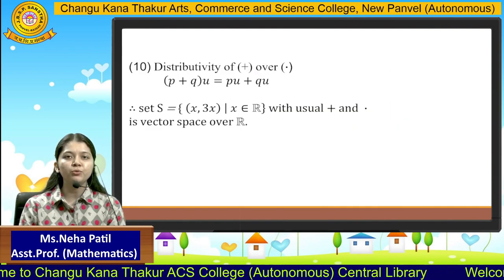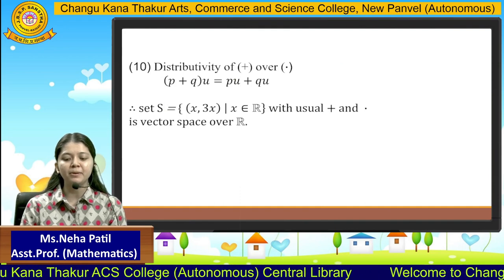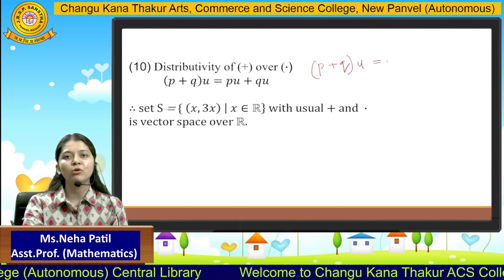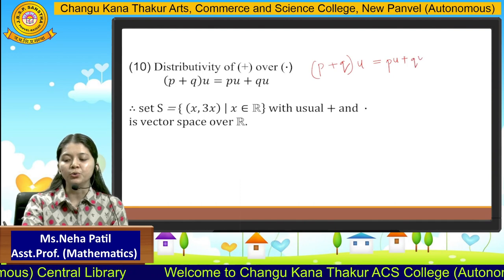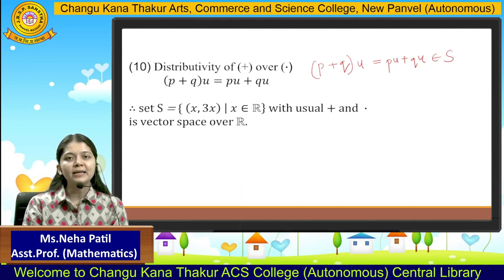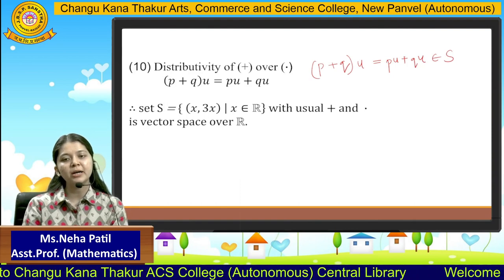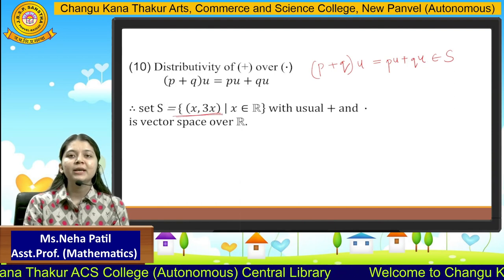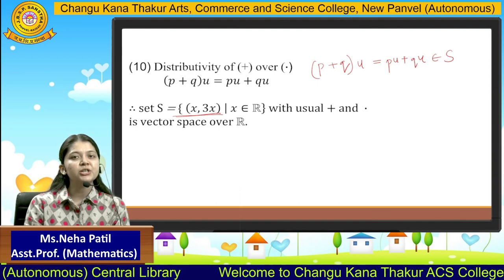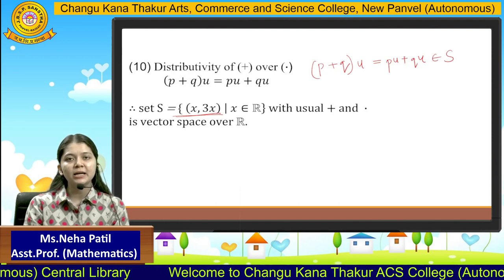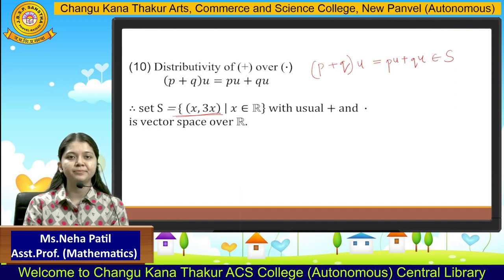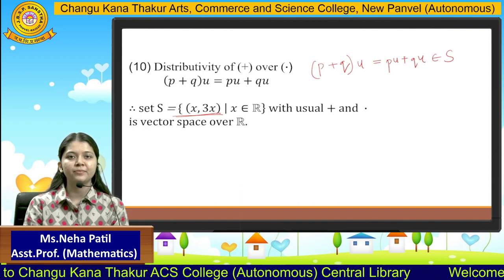Similarly, we can also prove the distributivity of addition over multiplication, wherein the addition of two scalars multiplied with the element will always result in pu + qu, which also belongs to that particular set. This property is also satisfied. If you observe, all ten properties are being satisfied by our set S, and so we can say that S is a vector space under the operations of addition and scalar multiplication. If any one of the properties fails to be satisfied, we cannot consider that set as a vector space.